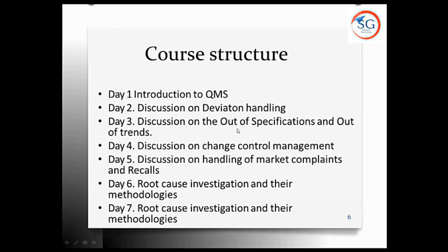The first element of QMS is deviation handling. A deviation is nothing but departing from a particular procedure. In the pharmaceutical industry, a procedure is a written Standard Operating Procedure. If you are not doing anything according to the approved written SOP, that is called a deviation. Deviations are classified as two types: planned deviation and unplanned deviation.